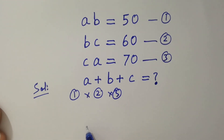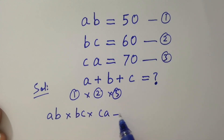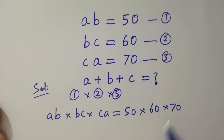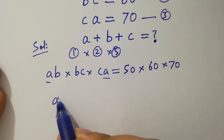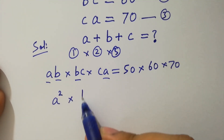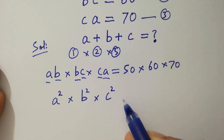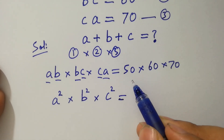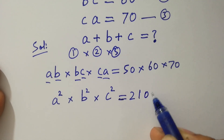Multiply these equations. We have ab times bc times ca equal to 50 times 60 times 70. This gives a² times b² times c² equal to 50 times 60 times 70, which is 210,000.